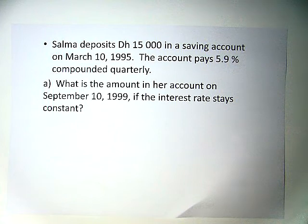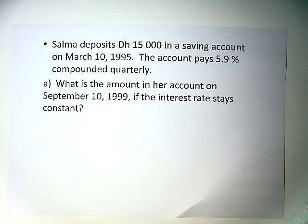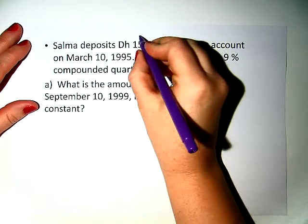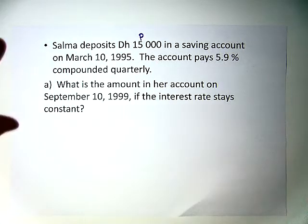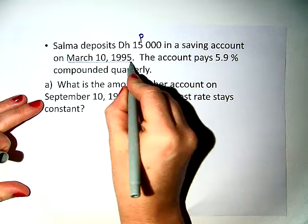Now we're going to look at one that involves not only time, but also compound interest. Let's start by identifying the things that we need. Selma deposits 15,000 dirhams into a savings account on March 10, 1995. So 15,000 is our principal, and our starting date is March 10, 1995.